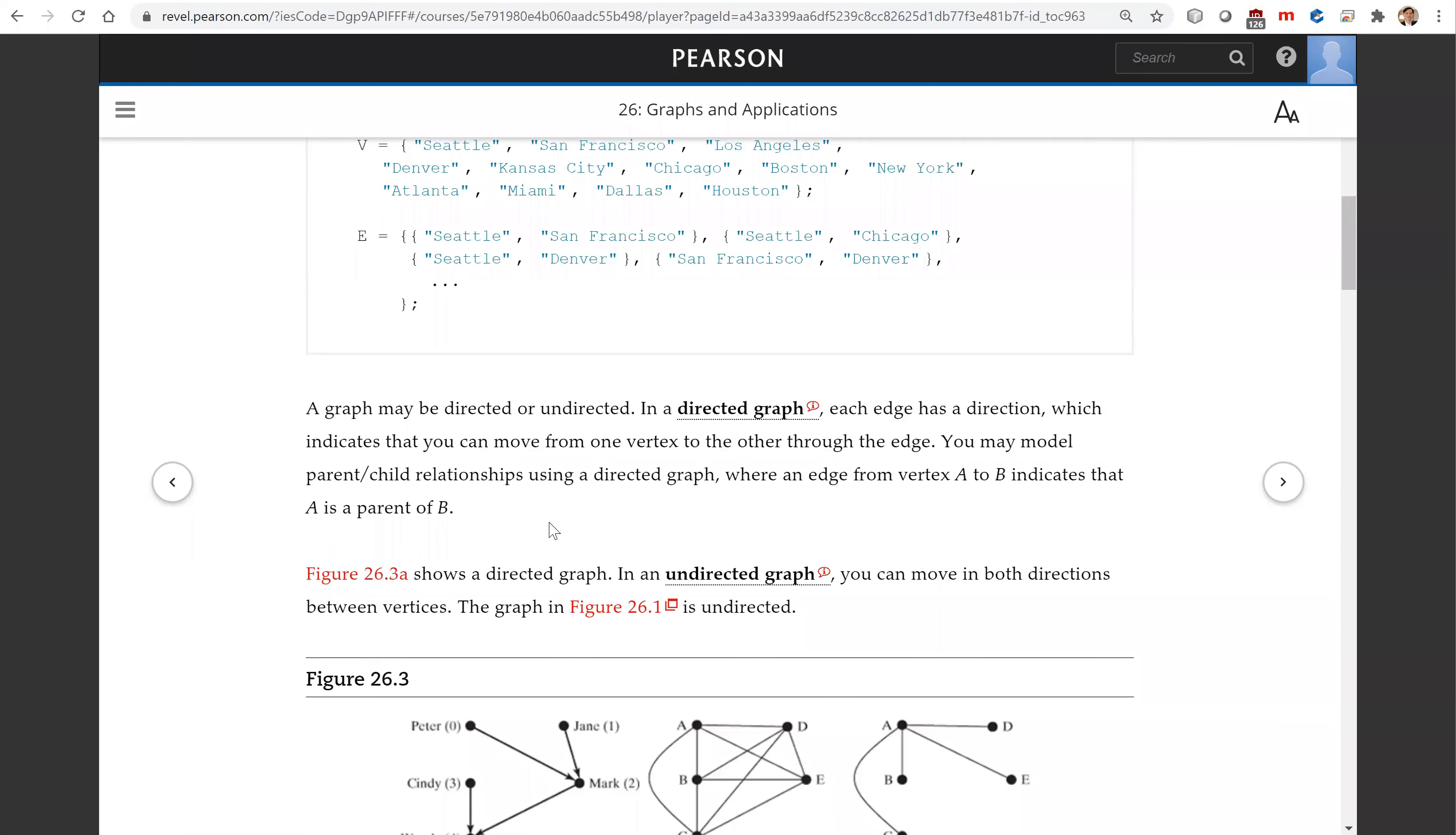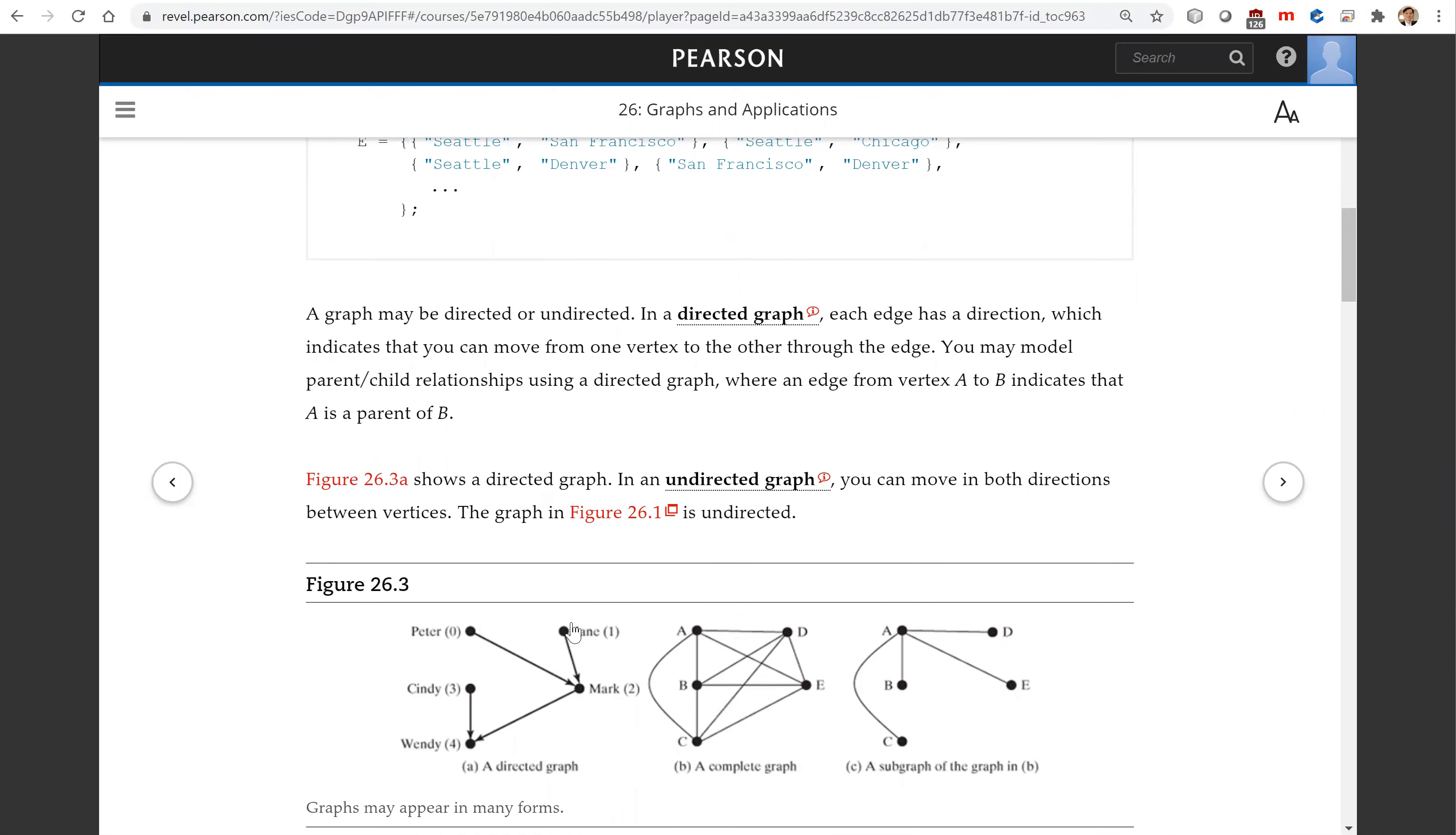A graph may be directed or undirected. In a directed graph, each edge has a direction. For example, this is a directed graph and this is an undirected graph, so there's no direction between the two vertices.